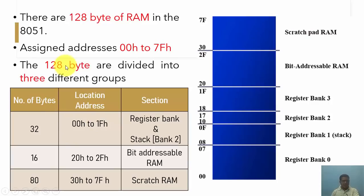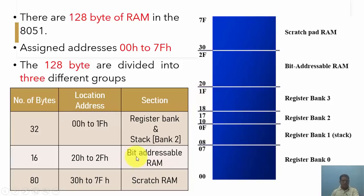In summary, the total 128 byte RAM in the 8051 microcontroller is distributed into three groups. The first group is the register bank, from 00H to 1FH, that is 32 bytes. The second slot is bit addressable RAM, from 20H to 2FH, that is 16 bytes of memory. The last one, from 30H to 7FH, is called scratch pad RAM, which contains 80 bytes of memory.